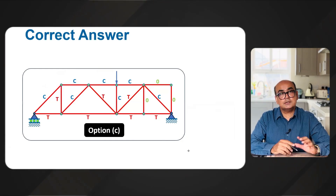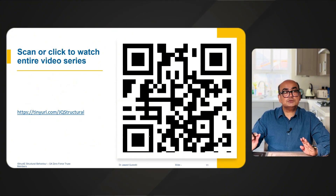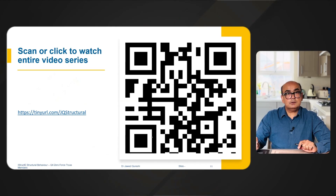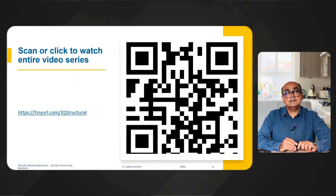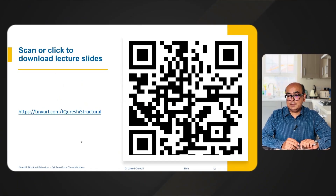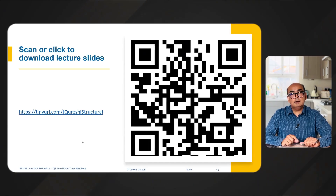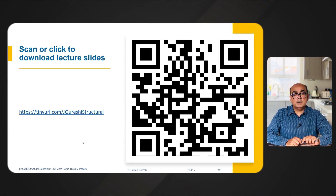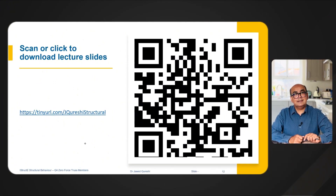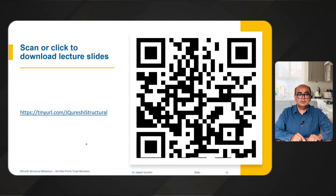Using these simple logics and golden rules we are able to determine the member forces. The correct answer is option C. You can watch the full video series on structural behavior by clicking the URL or scanning the barcode, and you can download a copy of the lecture slides from the link provided. Links for both the video series and lectures are in the description below. Thanks for watching — see you in the next lecture.